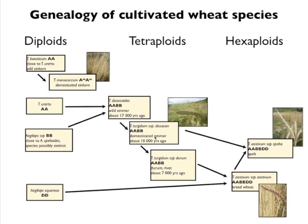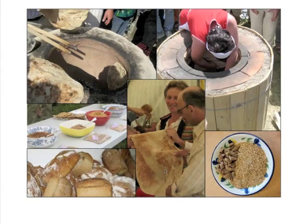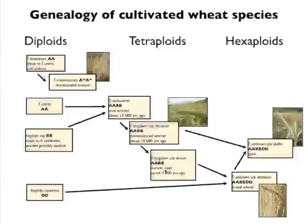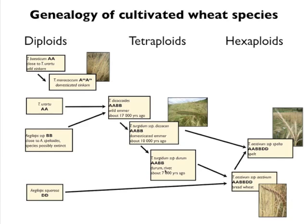From domesticated emmer, a fairly simple genetic change made it free-threshing, and that became Durham or rivet wheat. Rivet is not a familiar type of wheat anymore, but it was grown in northern climates. It's similar to Durham and can be used for pasta, but it has better adaptation to cold and wetter climates and better freezing tolerance. Durham, which is what we know as pasta wheat, is generally grown in more Mediterranean climates.